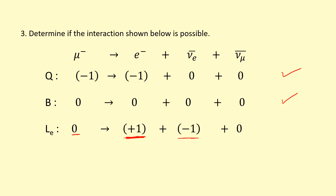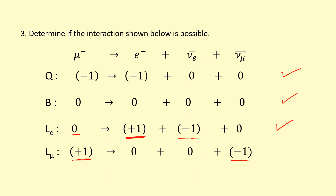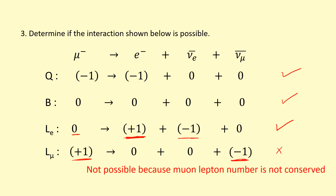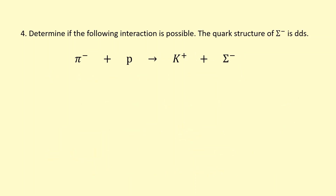On the right, the electron gives plus one and the electron anti-neutrino gives minus one, so electron lepton number is conserved — zero on both sides. Now checking muon lepton number: the muon on the left gives plus one. On the right, the muon anti-neutrino gives minus one, so muon lepton number is not conserved. This interaction is not possible.